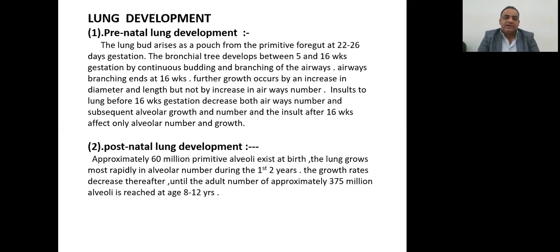First, prenatal lung development. The lung bud arises as a pouch from the primitive foregut at 22 to 26 days of gestation. The bronchial tree develops between the 5th and 16th weeks of gestation by continuous budding and branching of the airway.